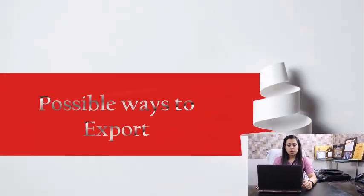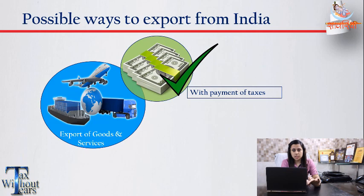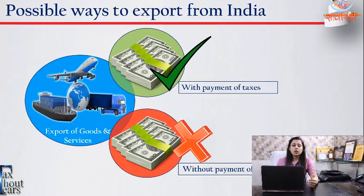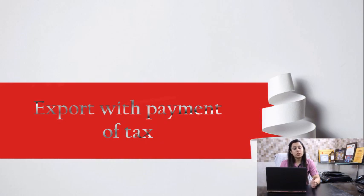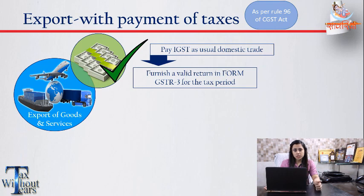After this, let us understand what are the possible ways of export. Export can either be made on payment of taxes, i.e. IGST since it is an interstate supply as per the IGST Act, or it can be done without payment of taxes. In the payment of taxes method, you need to pay IGST just like the usual domestic trade. Once you have paid the same, furnish the valid return GSTR-3 for the particular tax period.